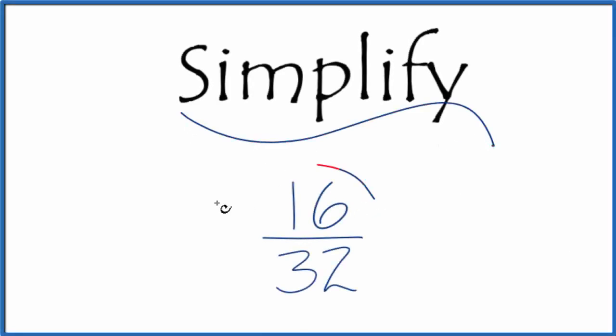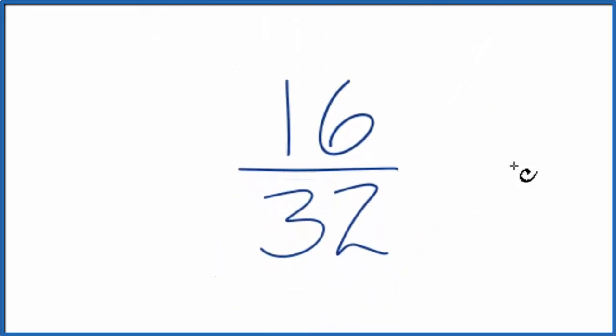Let's simplify the fraction 16 32nds, and here's how you do it. What we're trying to do is find another fraction that's equivalent. It would have the same value as 16 over 32, but would be in simplest terms.